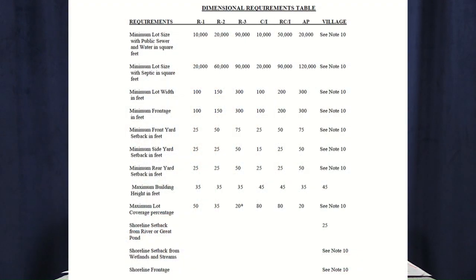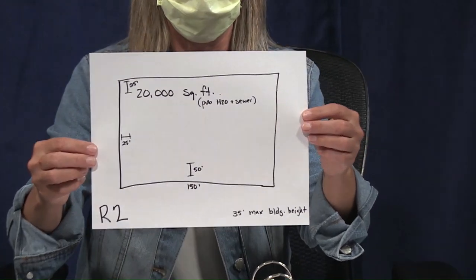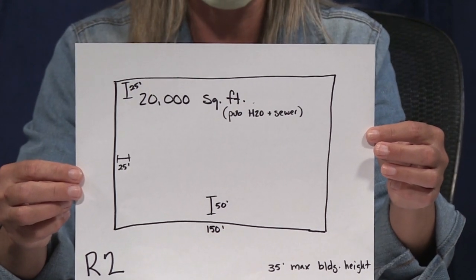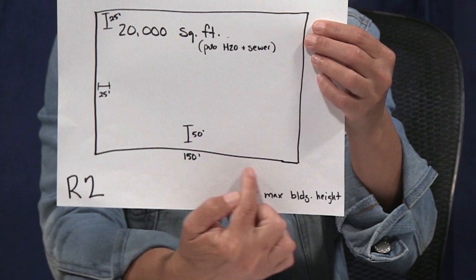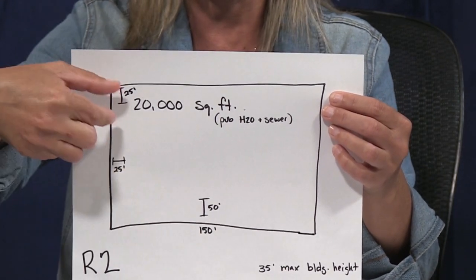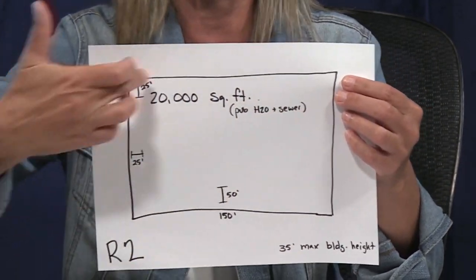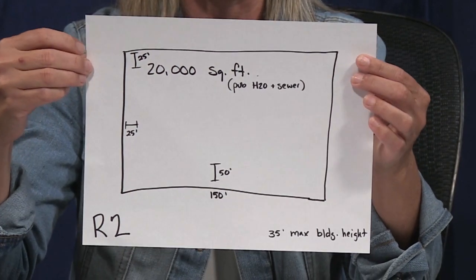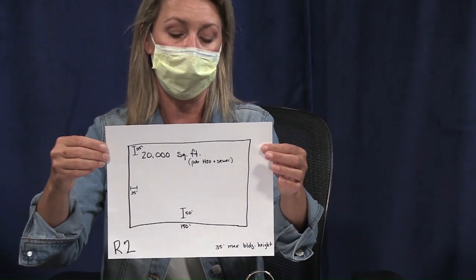Anything that says conditional use would be approved. Joe then goes to the dimensional requirements table on page 39 of our land use ordinance and looks in the R2 column to make sure he meets all the dimensional requirements. His lot is 0.459 acres, which is 20,000 square feet, and he's on public water and sewer. Without public water and sewer he would need 60,000 square feet — about an acre and a half. His lot is 150 feet wide, which is the minimum. The setbacks are 50 feet from the front, 25-foot side setback, and 25-foot rear setback, creating his building envelope. The maximum building height for that zone is 35 feet.